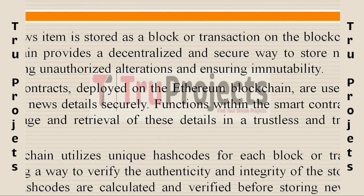Blockchain employs unique hash codes for each block or transaction, providing a reliable way to verify the authenticity and integrity of stored news data. Before storing new blocks, hash codes are calculated and verified, ensuring data accuracy and preventing unauthorized tampering. This mechanism adds an additional layer of security and trust to the stored news content.